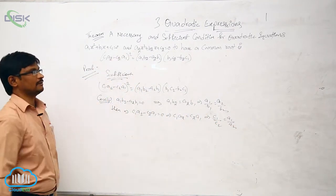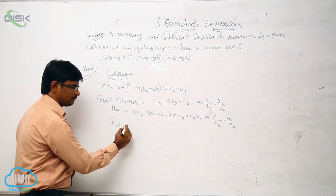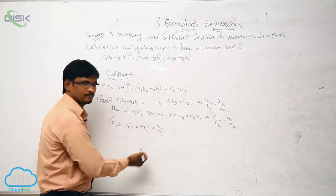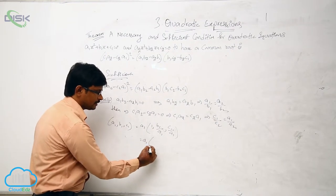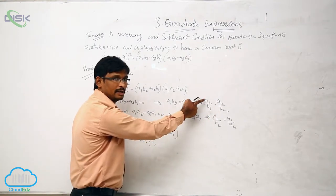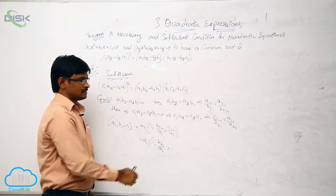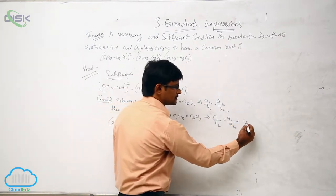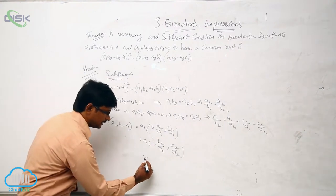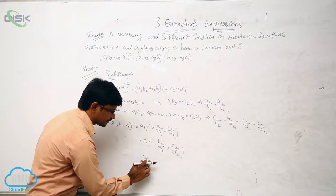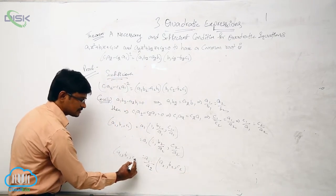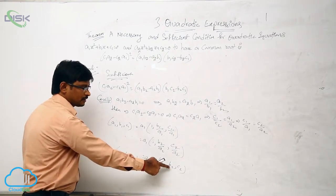We have to prove that these two quadratic equations have a common root. Consider the triple (a1, b1, c1). Take a1 common, giving a1 times (1, b1/a1, c1/a1). Now, since a1/b1 = a2/b2, we have b1/a1 = b2/a2. Similarly, c1/a1 = c2/a2. Taking a2 common from (a2, b2, c2), we get a1 times (a2, b2, c2) divided by a2.